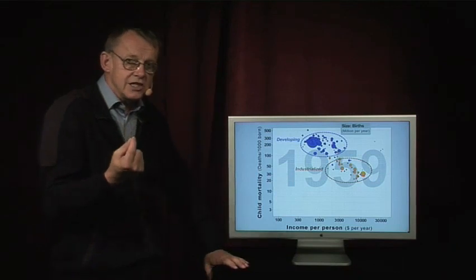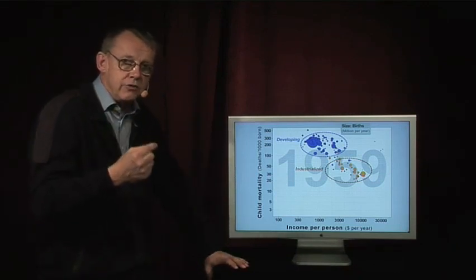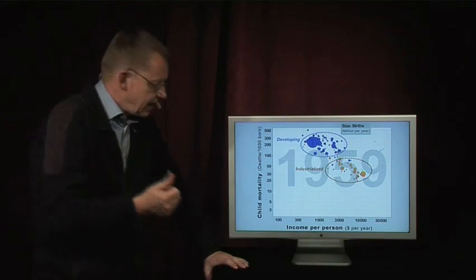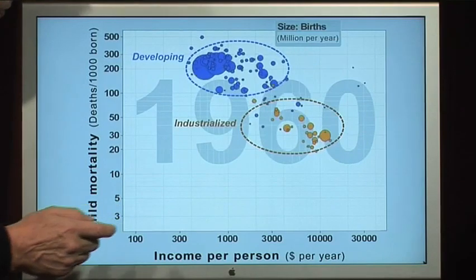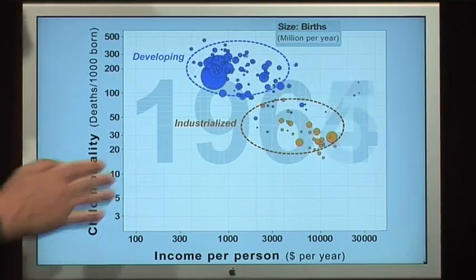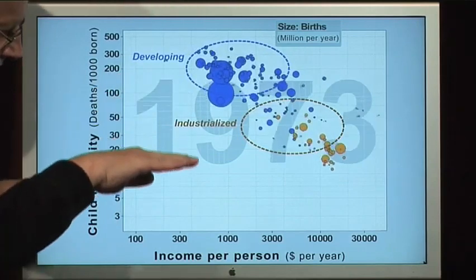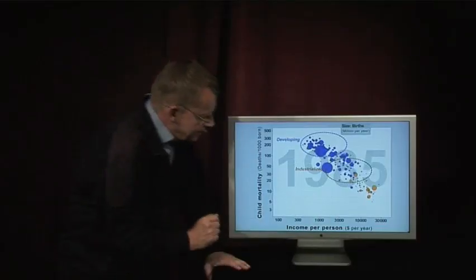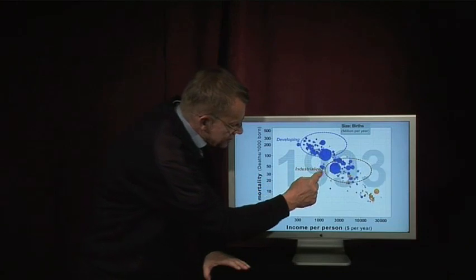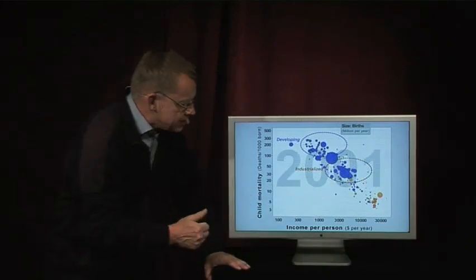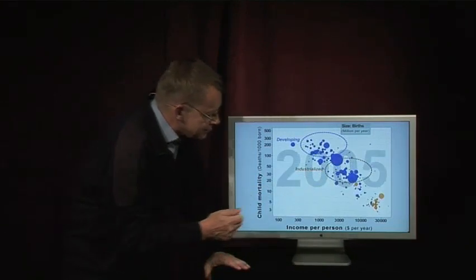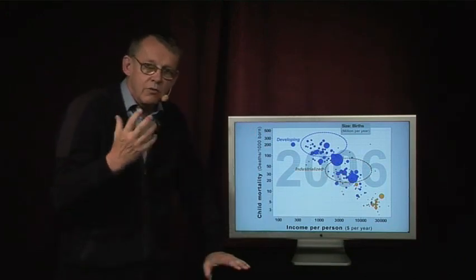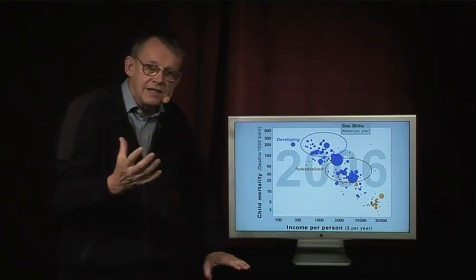What has changed? I will start the world animation and you can see year by year how child mortality is falling — going down, income is increasing. The former developing countries are coming into the circle representing the industrial countries. The big one there is China coming all the way down. We have a new pattern in the world.